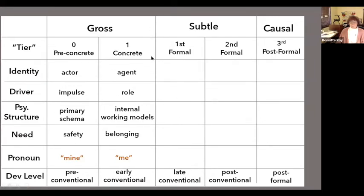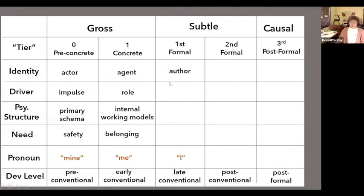The subtle level brings more reflexivity — self-awareness and the ability to ask questions of oneself. First formal involves self-awareness and reflexivity; second formal involves more cognitive complexity. Coming to the 'I': the person sees that every time they're in a different situation, they role-switch — they can be many different roles.